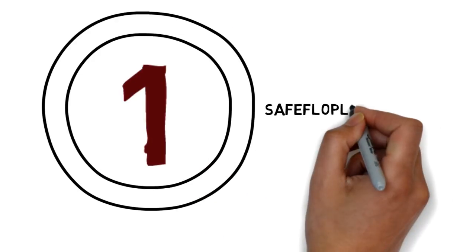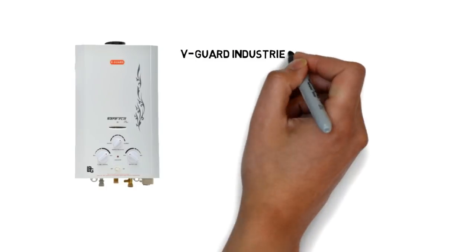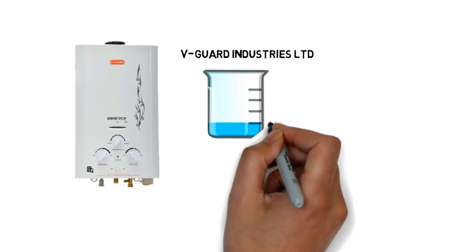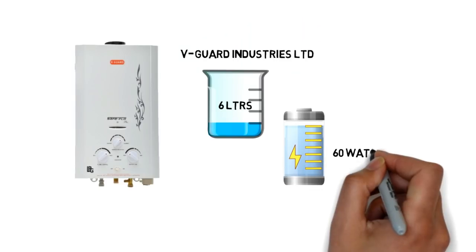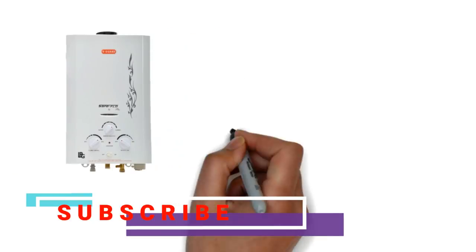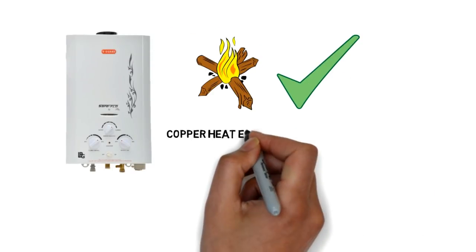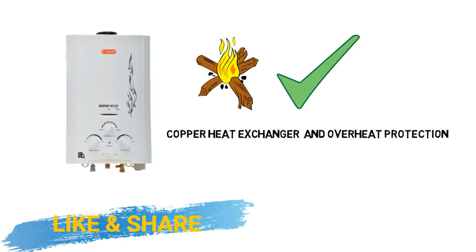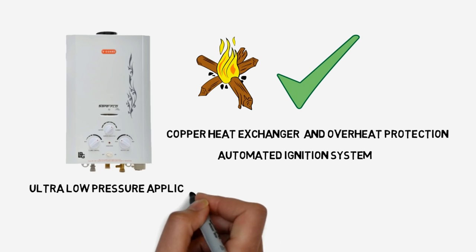Number 1: Safeflow Plus Gas Geyser White. Safeflow Plus Gas Geyser made by V-Guard Industry Limited. It has a capacity of 6 liters and power output of 60W. It comes with white color steel body. It has SS burner which takes heat very quickly. It also has copper heat exchanger and overheat protection. It provides automated ignition system and ultra-low pressure application.